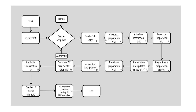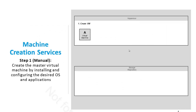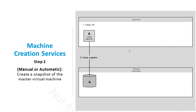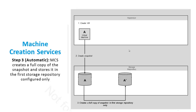In the next slide we will see the workflow step by step — how the MCS-based machine catalog is created from the Studio console. First, we create the VM on any hypervisor, configure the VDA installation and application installation to make a complete VM. Then we create a snapshot, whose details are stored on the storage repository. MCS then takes a copy and keeps it in the storage repository.